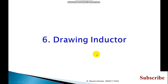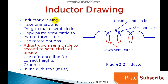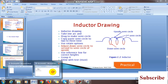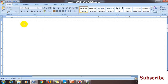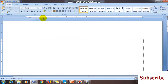I am also explaining in this video how to draw the inductor. To draw the inductor, take one arc and drag it to make a semicircle. Copy and paste the same semicircle — this is the first semicircle, this is the second semicircle. I will explain practically how to draw the inductor, then afterwards I will show you the 3D view. This is the Word file we are working in.